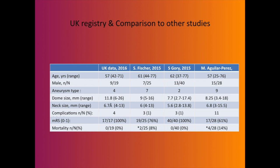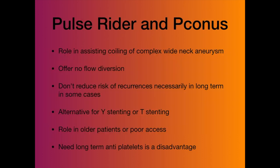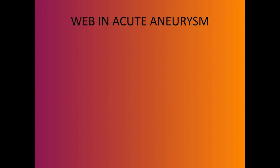PulseRider and pCONus do not offer flow diversion — they work like stent-assisted coiling and do not necessarily reduce recurrence risk. They are alternatives to Y-stenting or T-stenting particularly in older patients, those with poor access where T-stent or Y-stent or WEB won't work. However, they require long-term antiplatelets, which is a disadvantage.